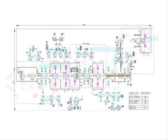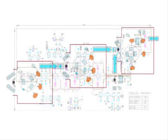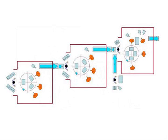¿Cuáles son los pasos que hay que seguir? El layout y el flujo de materiales en la planta productiva y el tiempo ciclo resultante del proceso, cuántas piezas vamos a ser capaces de fabricar por hora.